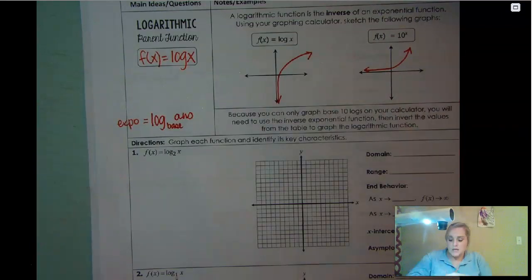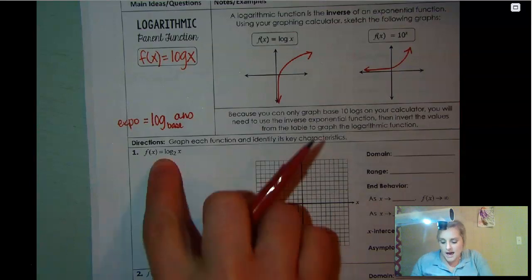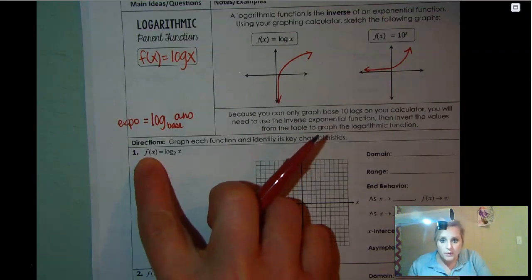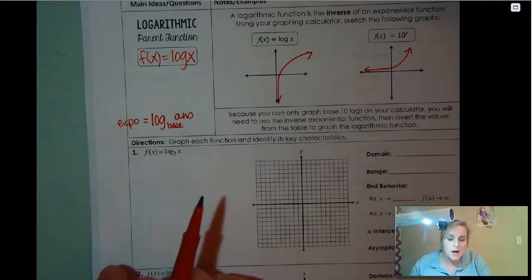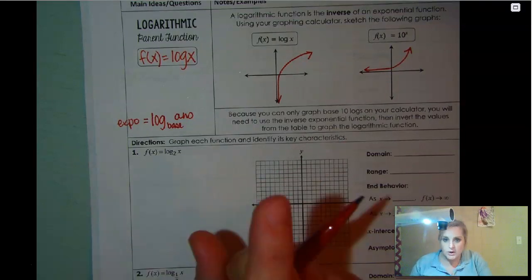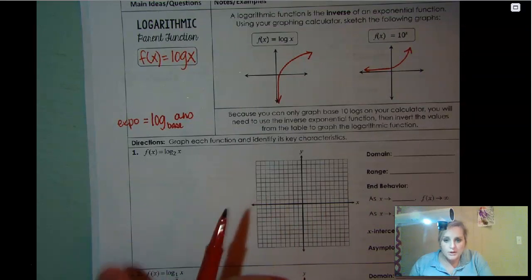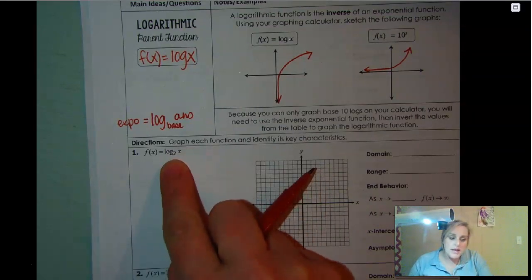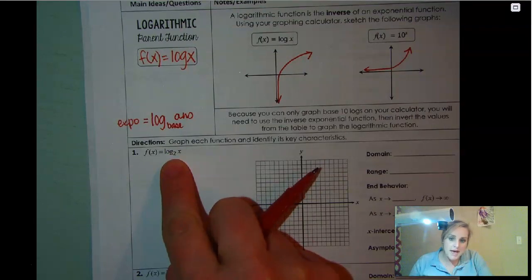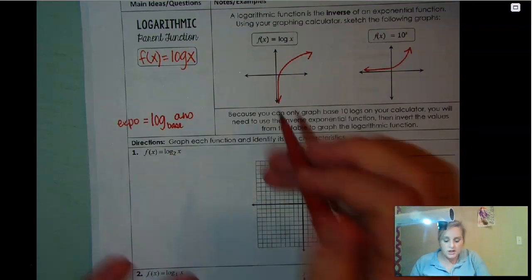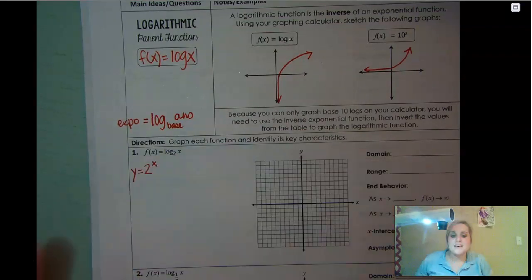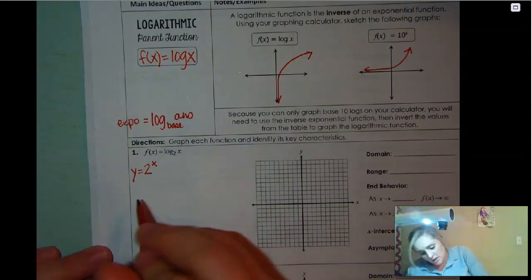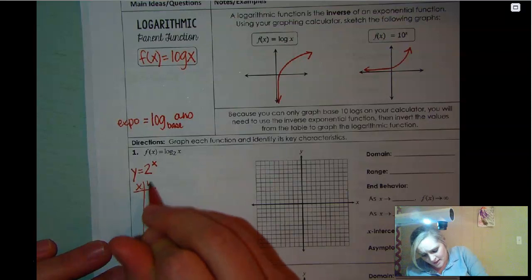So this is just a different way to write y. So y equals log base 2 of x. Going back to what I taught you, this would be log base equals exponent. So we know that y right here would be our exponent, and that two would be our base and then x would be our answer if we were going to be writing this as an inverse.